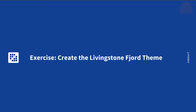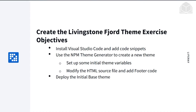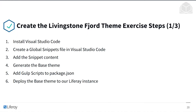Let's do an exercise where we will create the Livingston Fjord theme. At the end of this exercise, we will have learned the following things: first, we will have installed Visual Studio Code and added code snippets. Then we'll have learned how to use the npm theme generator to create a new theme, including setting up some initial theme variables, as well as modifying the HTML source and adding footer code. Finally, we'll know how to deploy the initial base theme.